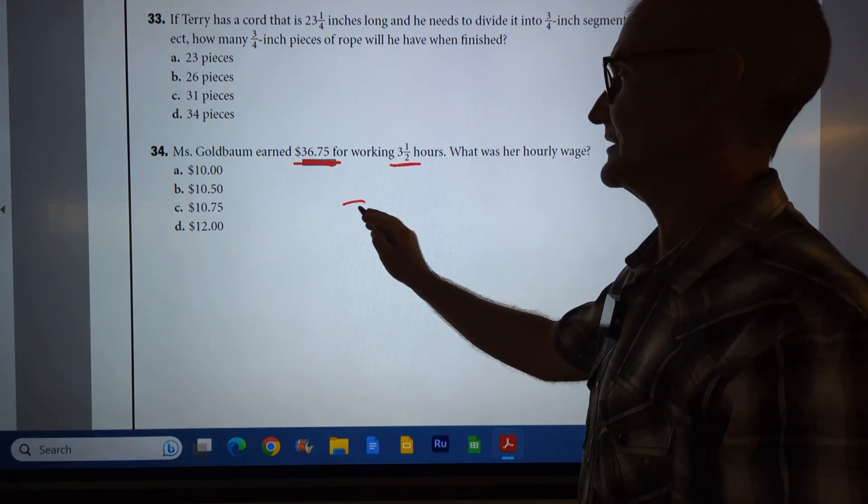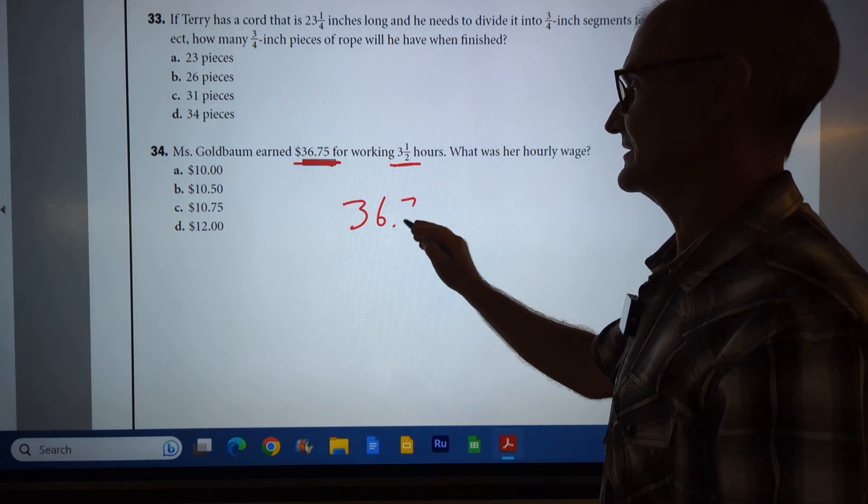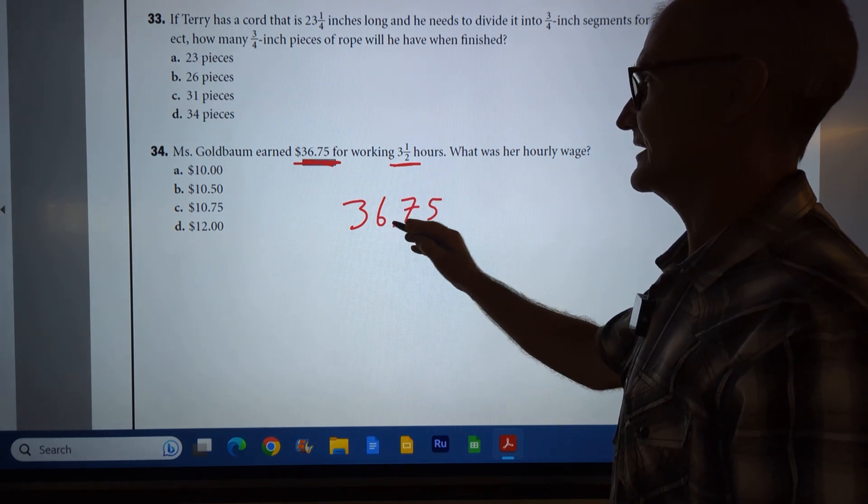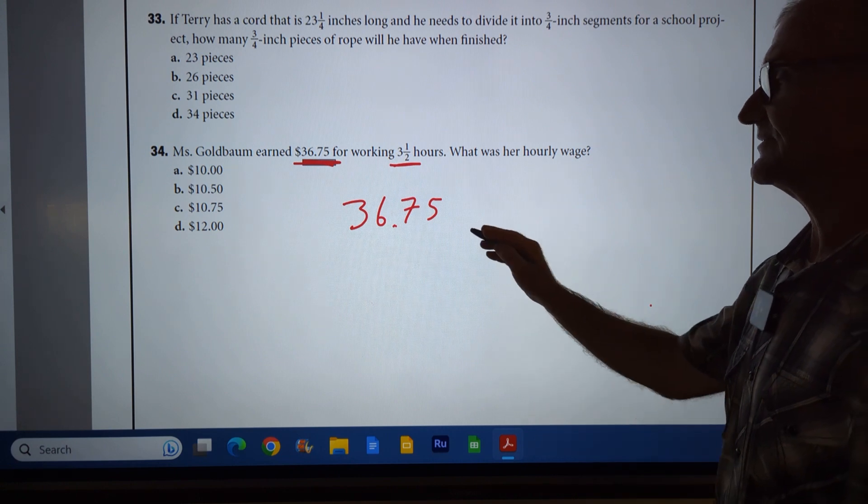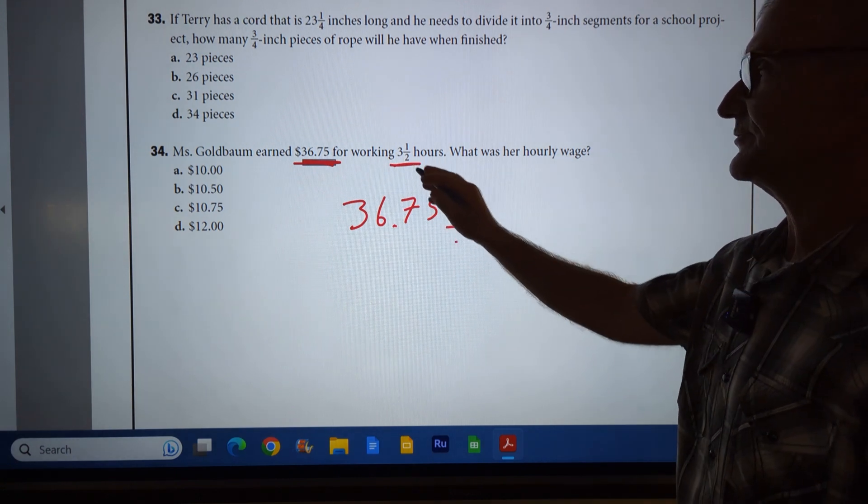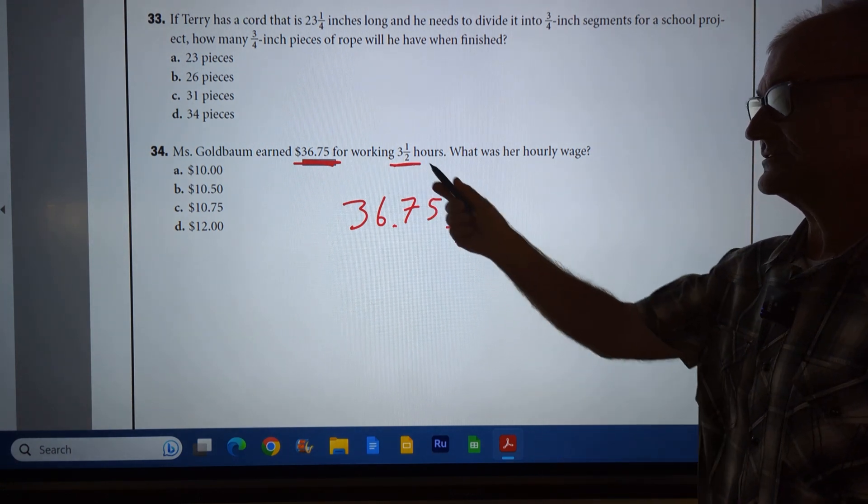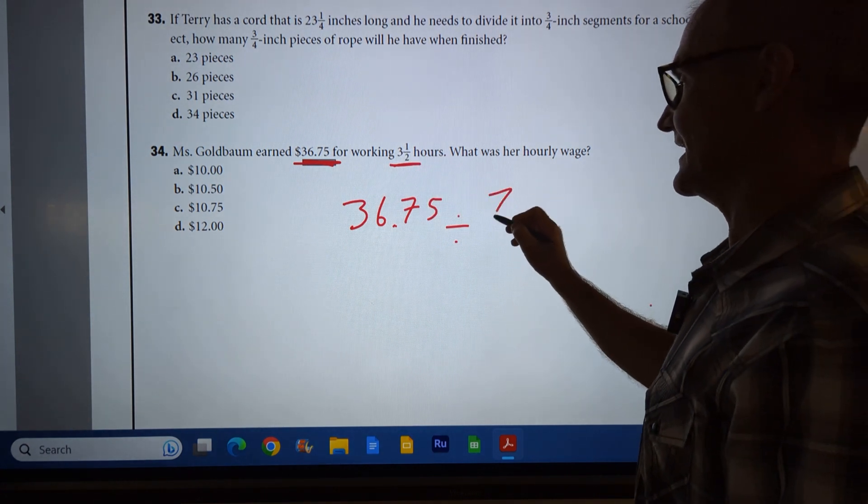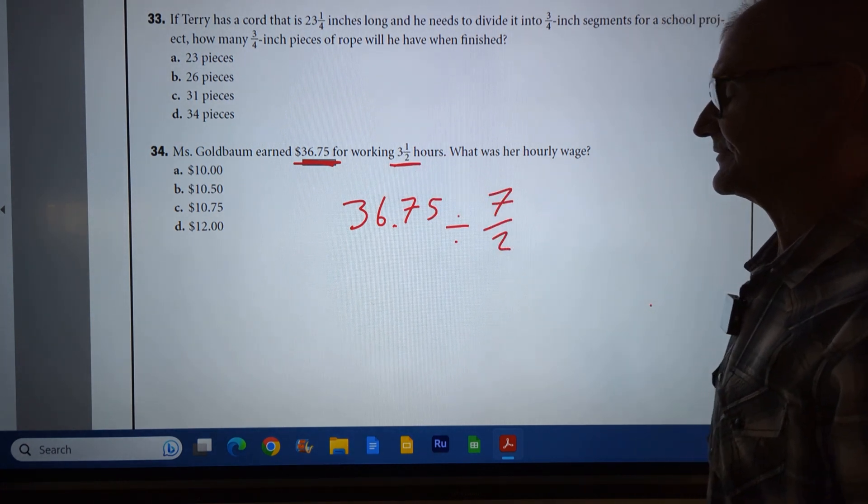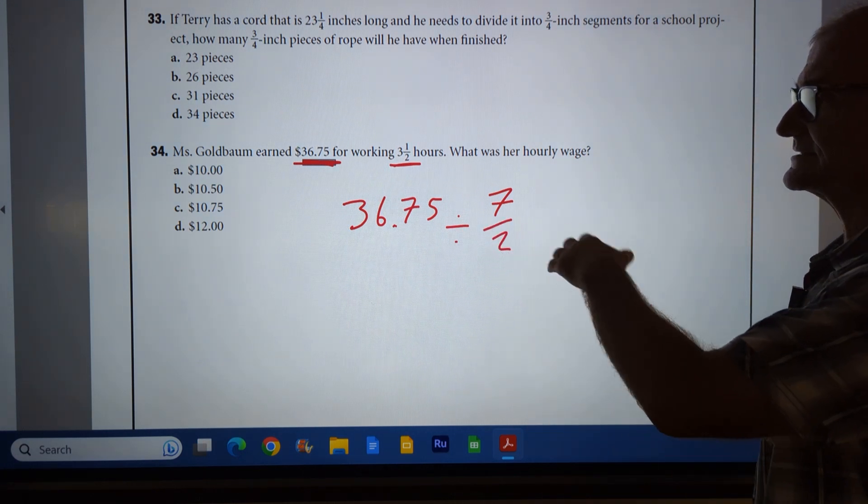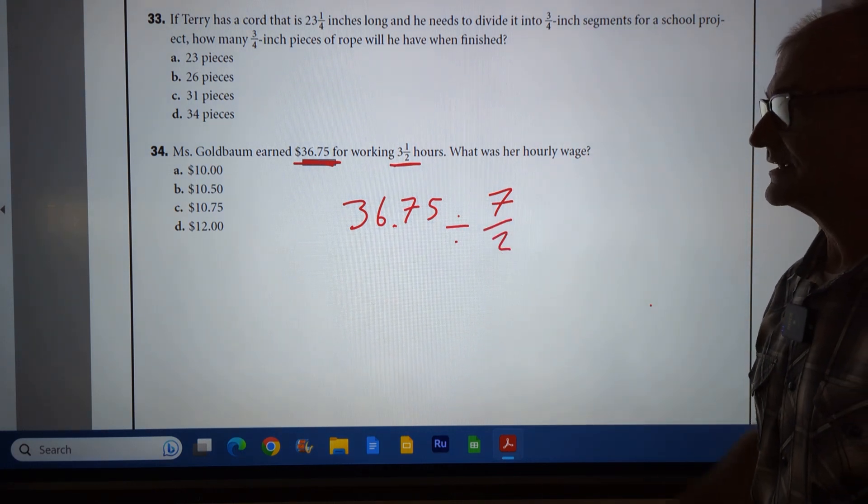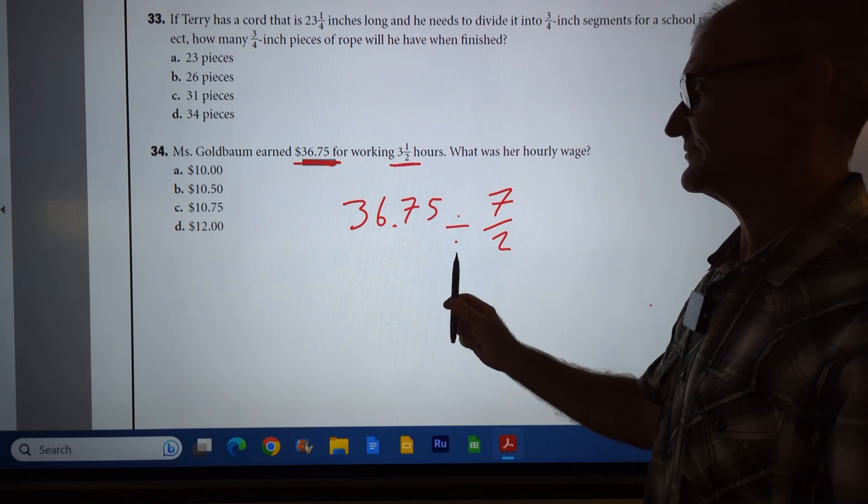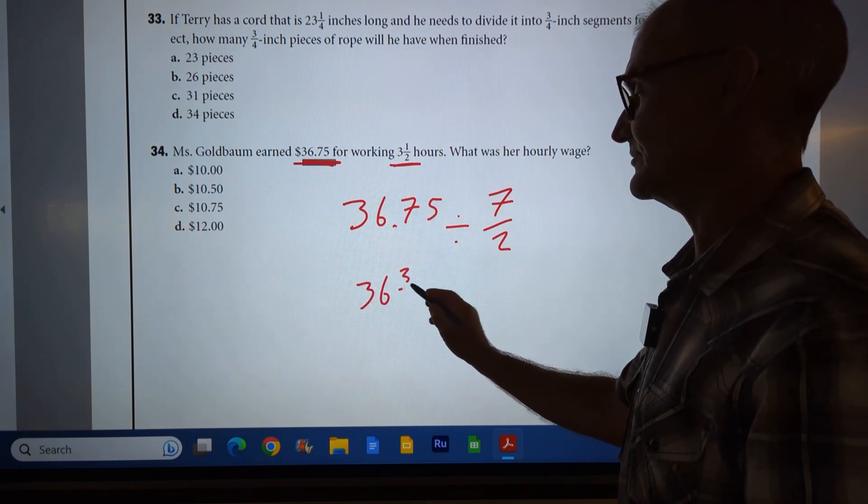So this is her total amount, 36.75. It's a decimal. And right here, I have fractions. I'm going to divide it by three and a half. I'm going to turn that into an improper fraction. Three times two, six, plus one, seven halves. And I got decimals and fractions. I probably want to use one or the other. I know that 36.75 is 36 and three-quarters.